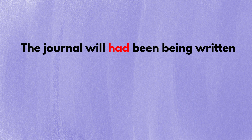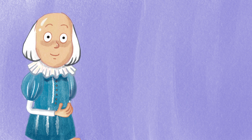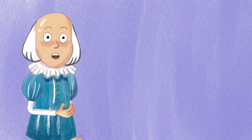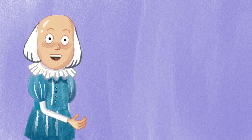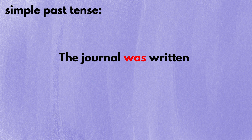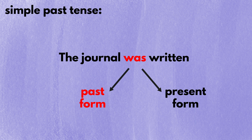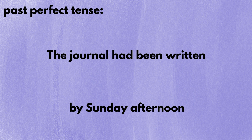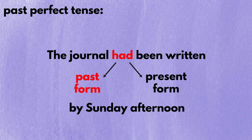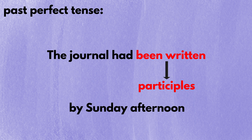What about past tenses? If you look at them closely, all of them follow the same rule. For instance, in the simple past tense the journal was written, the verb be is the only and therefore the first element in the predicate verb, so you may use the past tense was. In the past perfect tense the journal had been written by Sunday afternoon, the auxiliary verb have is the first element and can be written in its past form had. The rest of the words are in either the present form or participles. The same applies to all other tenses.